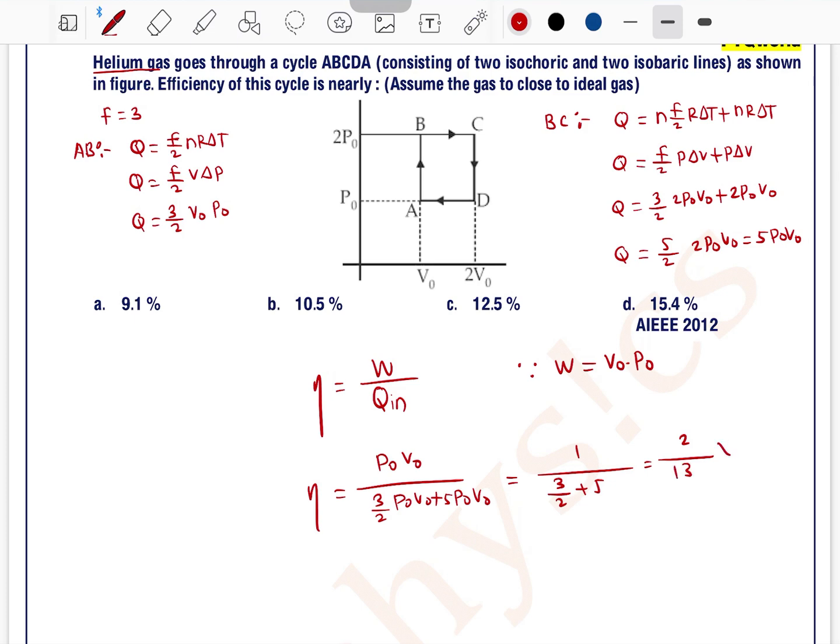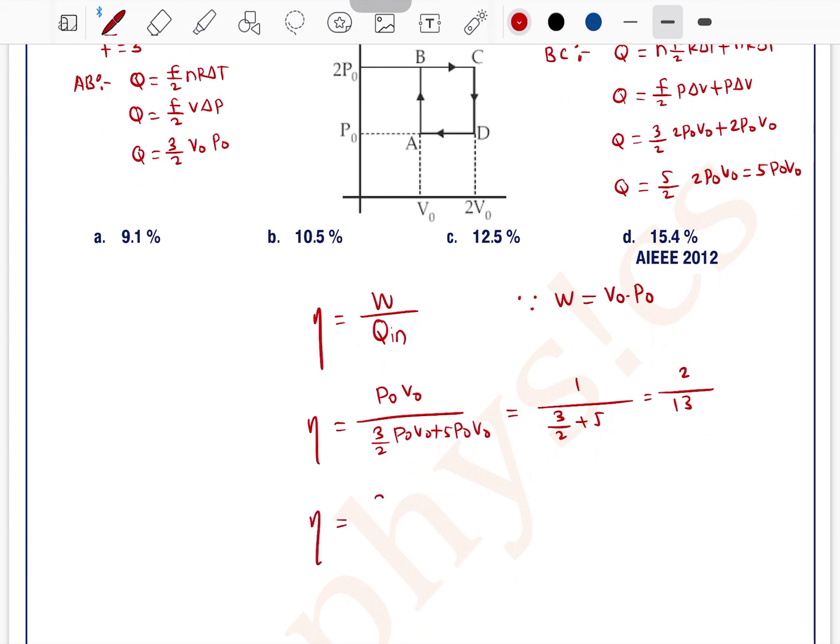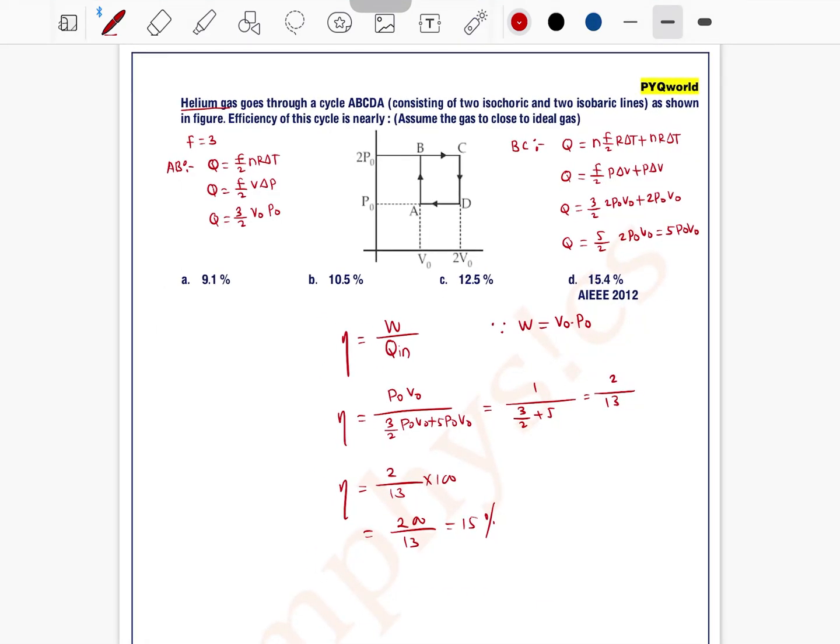Now if we find efficiency in terms of percent, 2 by 13 into 100 equals 200 divided by 13, which is approximately 15 percent. So option d is the correct one. Actually it is 15 point something, so answer is 15 percent, option d is correct.